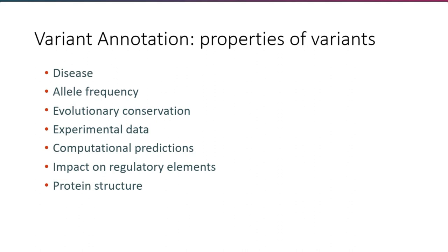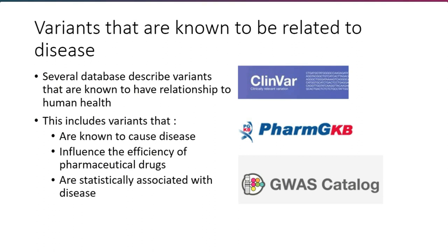There are many things you might want to know about variants. I've broken these down into different categories: disease relevance, allele frequency, evolutionary conservation, experimental data, computational predictions, impact on regulatory elements — most of which are non-coding — and for coding variants, the impact on protein structure. I'm going to go through each of these categories and tell you about some databases that contain information from them. And as a preview to what I'll say about OpenCRAVAT, you can access all of these databases through OpenCRAVAT.